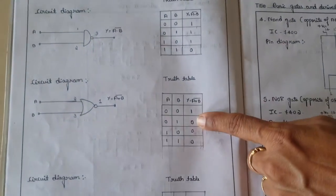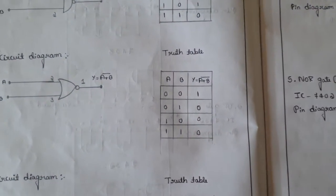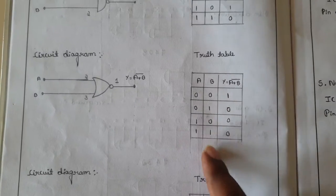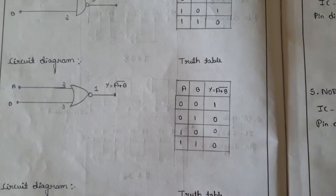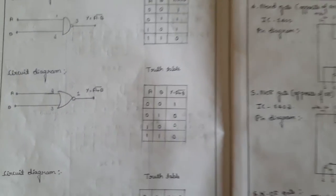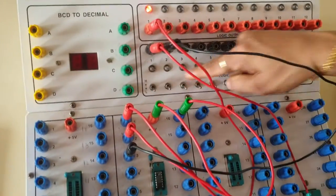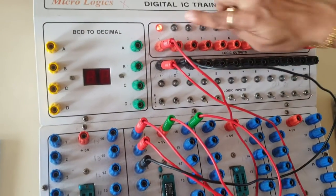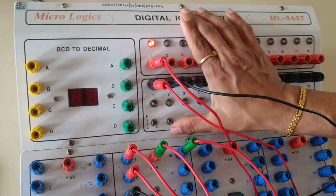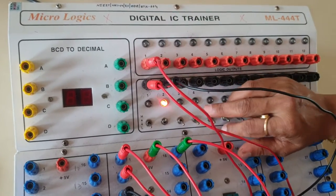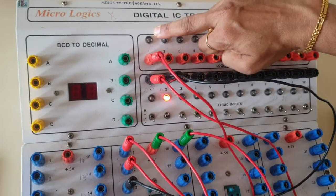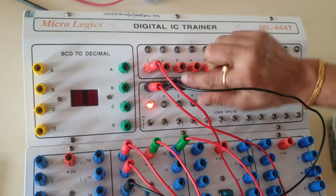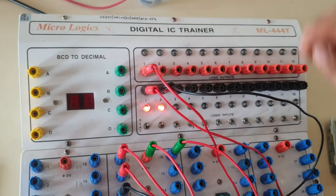Observe the truth table. For the NOR gate, when both inputs are 0, the output is 1. For all other input combinations it is 0 or low. In the circuit, when both inputs are low or 0, the output is high or 1. For 0 and 1 it is low, for 1 and 0 it is low, and for 1 and 1 it is still low.